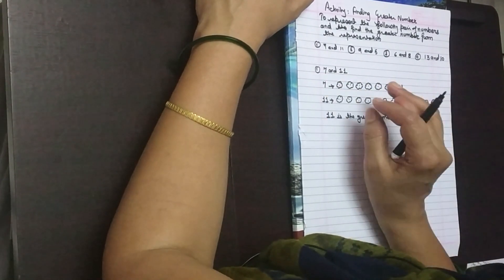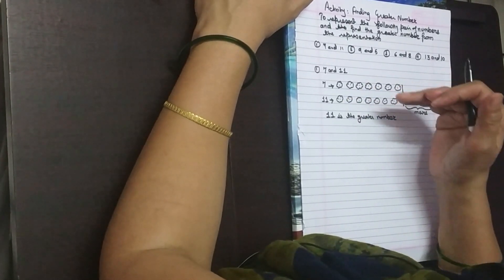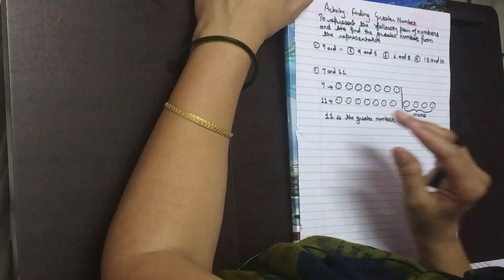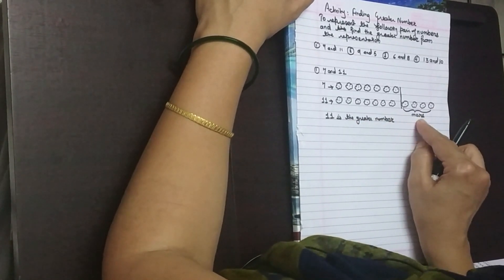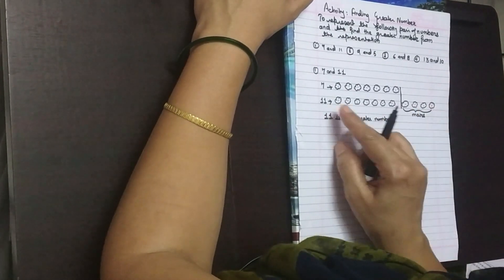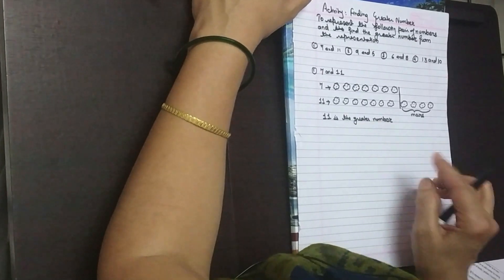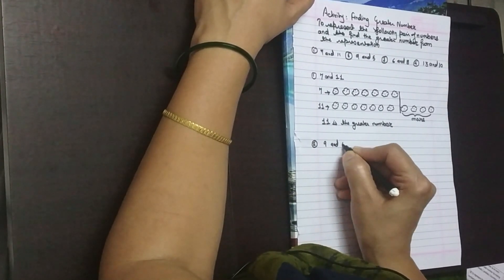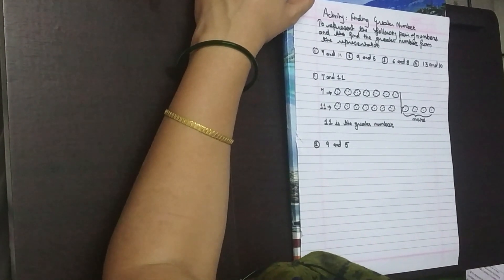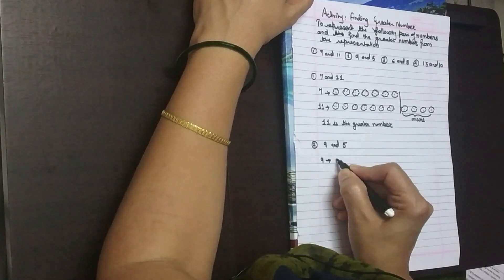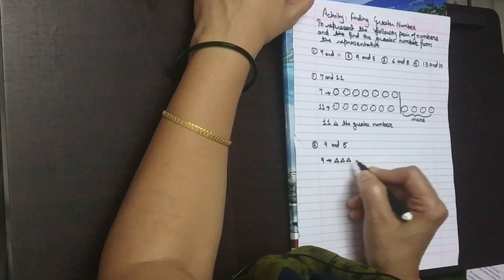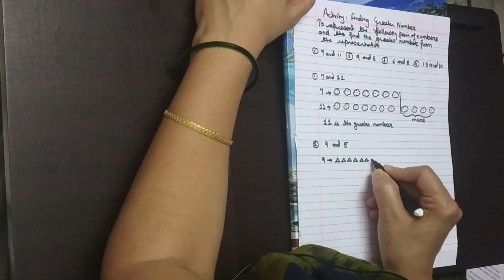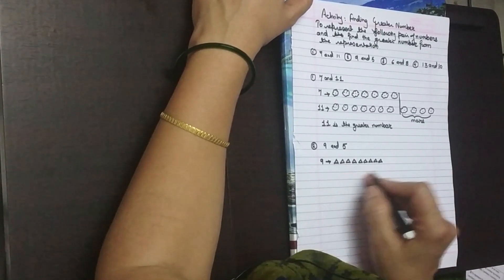We are going to use any shape to represent both numbers, one below the other. Then compare the representations. In which representation are more shapes used? That number will be greater. Let me explain one more pair: 9 and 5. We will represent the number 9 with any shape — I am drawing 9 triangles. I have used 9 triangles to represent the first number.